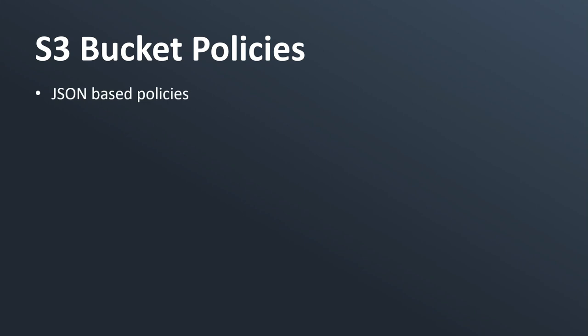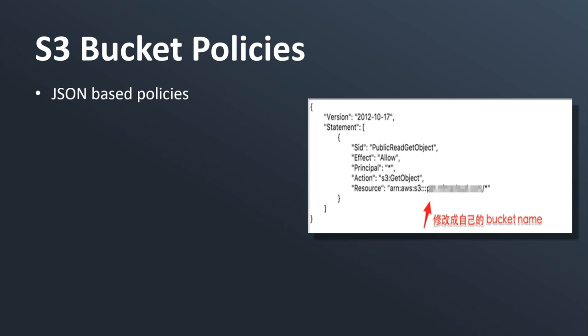Now for a deep dive on S3 bucket policies — they are JSON-based policies. Here is a JSON bucket policy that allows public read on our S3 bucket. It says effect: Allow, principal: star (meaning anyone), action: GetObject, resource: example-bucket slash star — meaning any object within that S3 bucket.